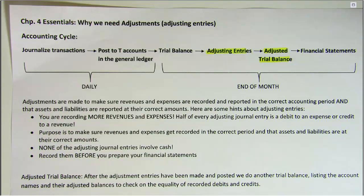Because of those two principles, at the end of the accounting period, our account balances may not be correct. We want to make sure revenues and expenses are recorded in the correct period and that the assets and liabilities will appear on the balance sheet at their corrected amounts.